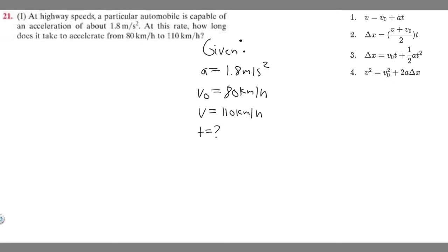In order to solve this, what you need to realize first is that our initial velocity and final velocity are given in kilometers per hour, and our acceleration is given in meters per second squared. We need them all to be in the same units, so we're going to change these to meters per second.